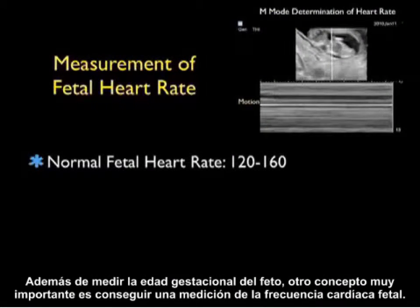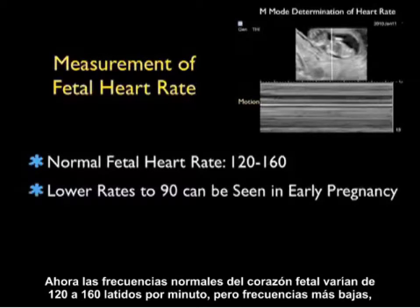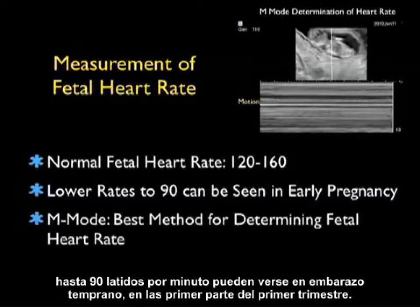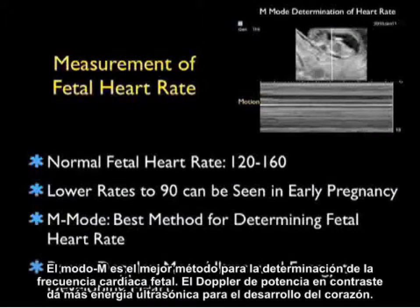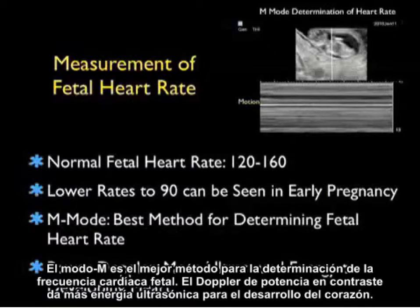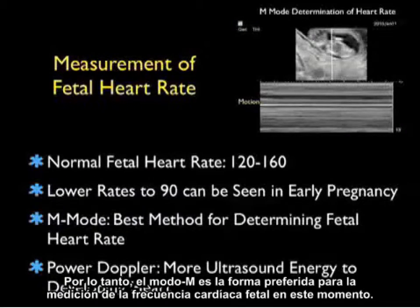In addition to measuring the gestational age of the fetus, another very important concept is to get a measurement of the fetal heart rate. Normal fetal heart rates will range from 120 to 160 beats per minute, but lower rates down to 90 beats per minute can be seen in early pregnancy in the early parts of the first trimester. M-mode is the best method for determining fetal heart rate. Power Doppler, in contrast, gives more ultrasonic energy to the developing heart. Thus, M-mode is the preferred way of measuring the fetal heart rate.